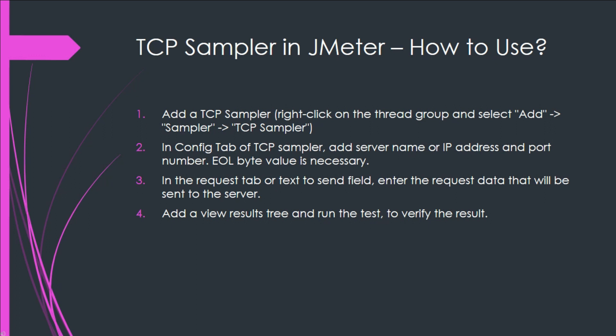In the config tab of the TCP sampler, we need to set the server name or IP address, the port number — in our case 1234 — and the EOL byte value, if required.